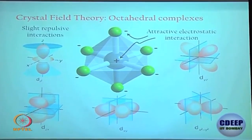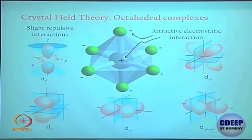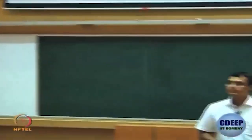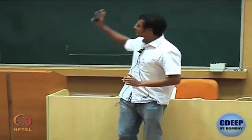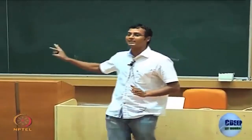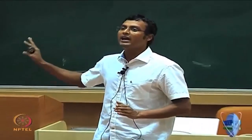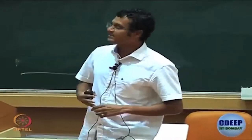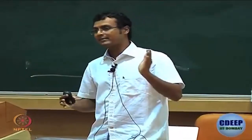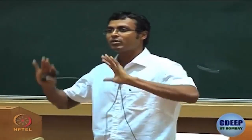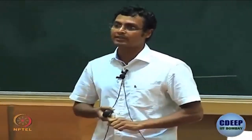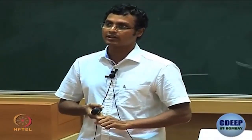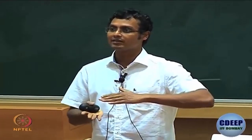If d_z² and d_x²-y² are both destabilized, why do they differ from each other? That is actually where Jahn-Teller distortion comes in — the origin of Jahn-Teller distortion and z-elongation. We will come back to this.